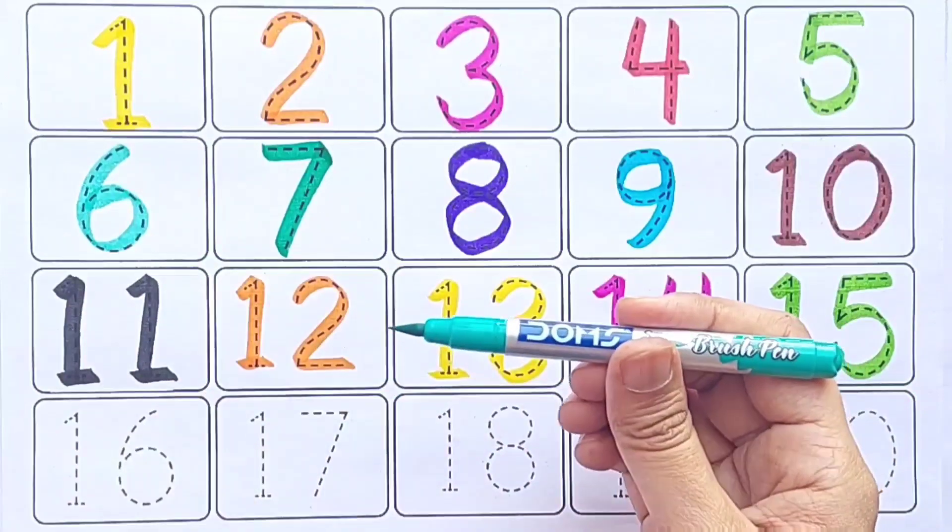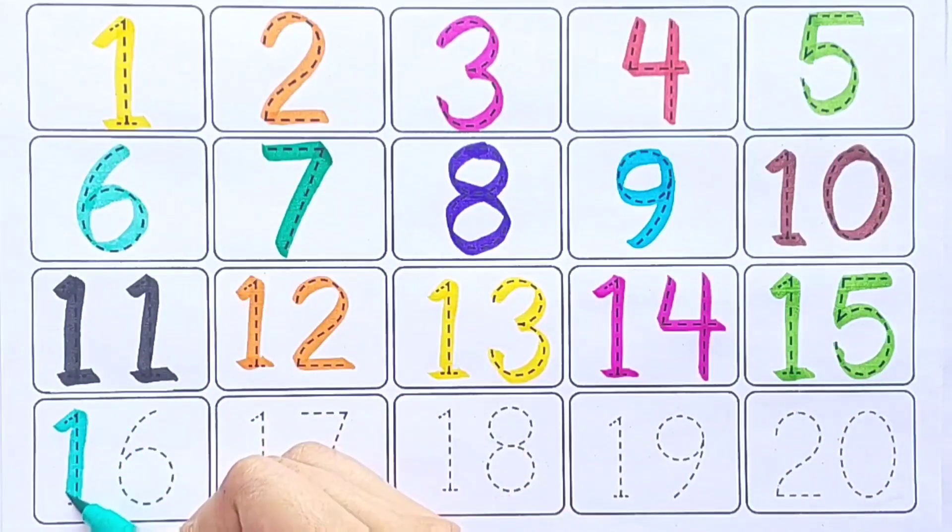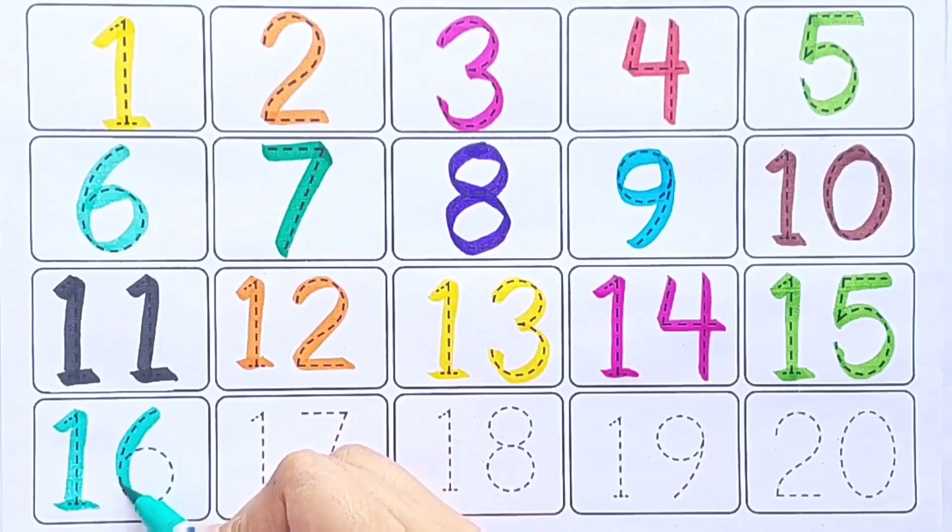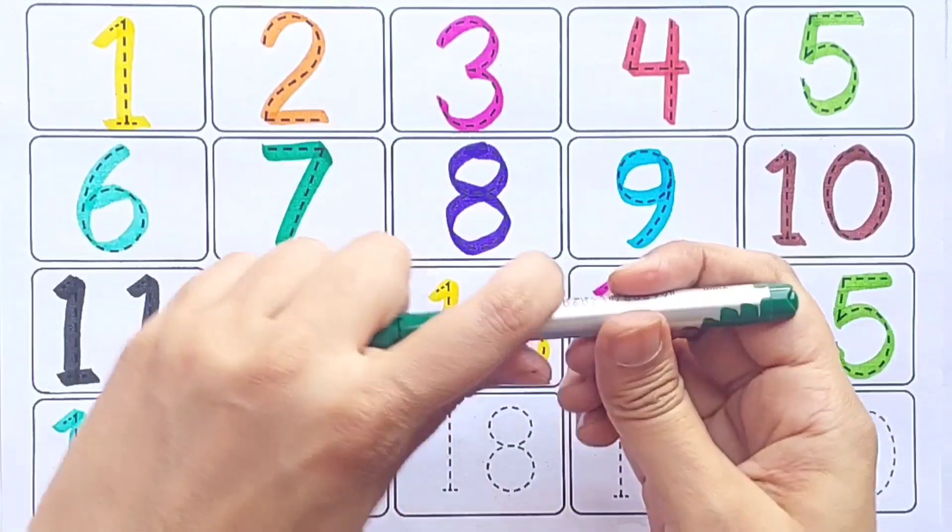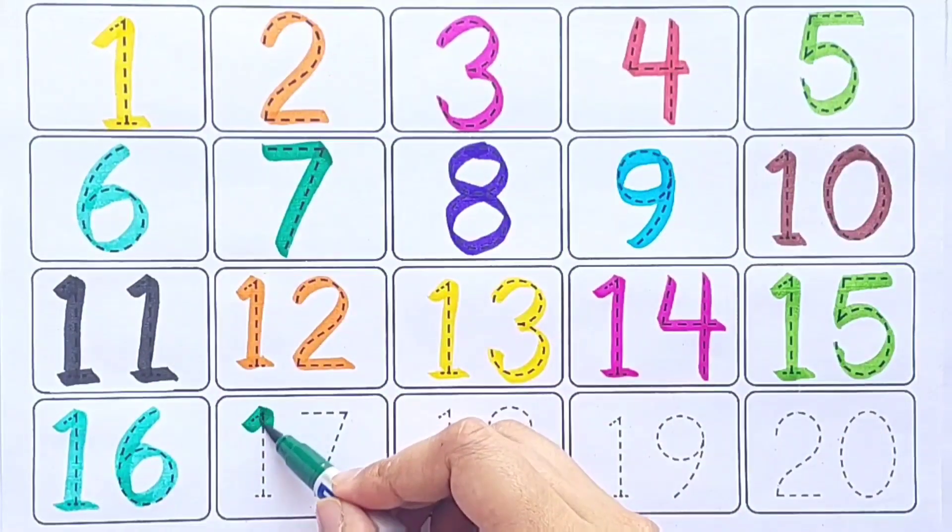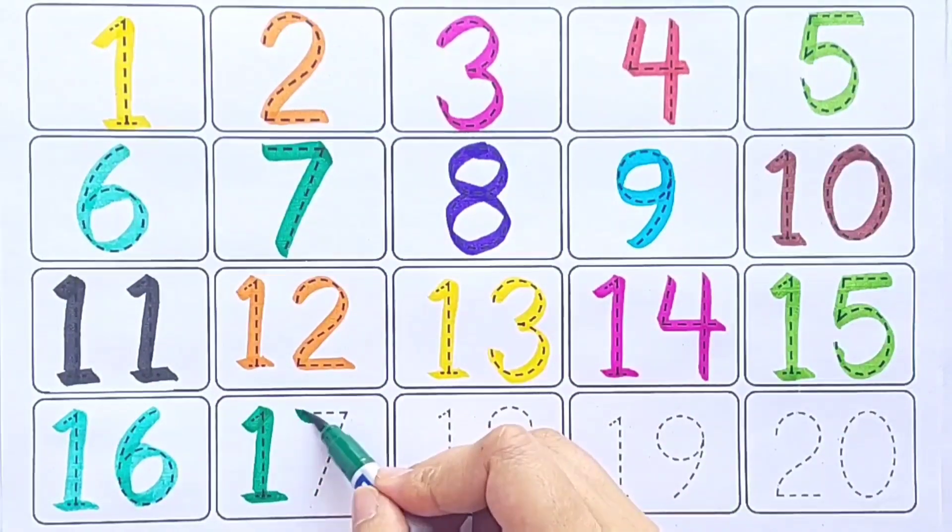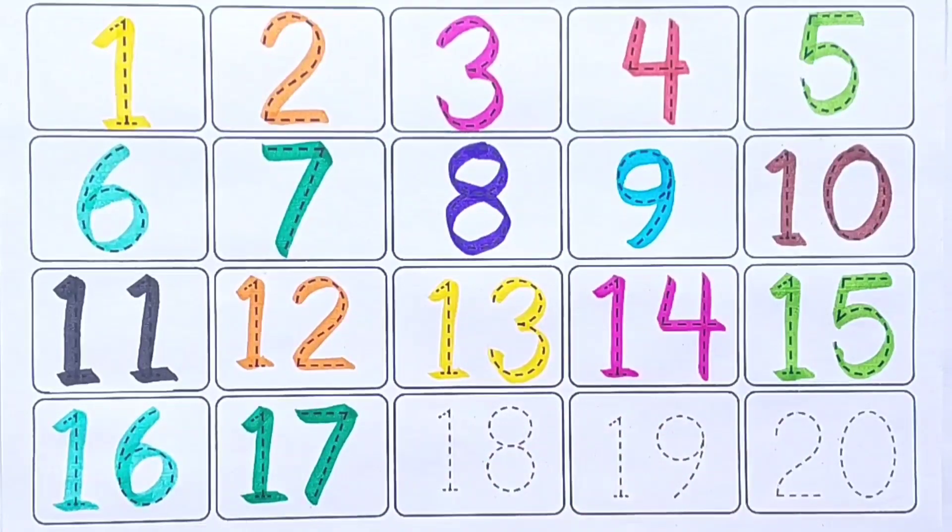Sea Green Color. Sixteen. S-I-X-T-E-E-N, Sixteen. Green Color. Seventeen. S-E-V-E-N-T-E-E-N, Seventeen.